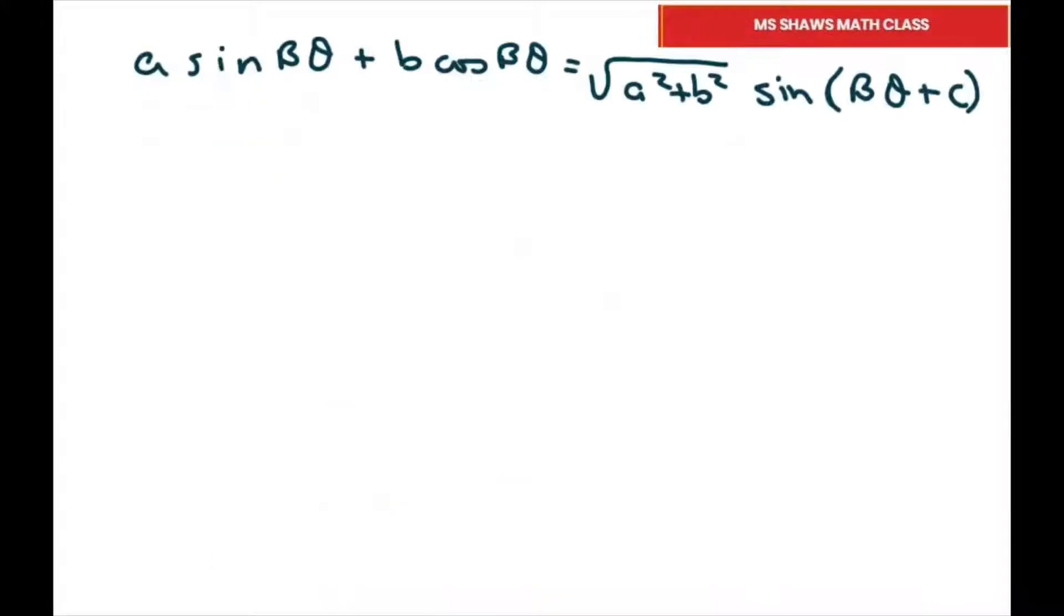All right, so we're going to do the first part which is part A, and I wrote it out. Our problem is 3 sine of 2 theta plus 4 cosine of 2 theta. So let's write down what we have.